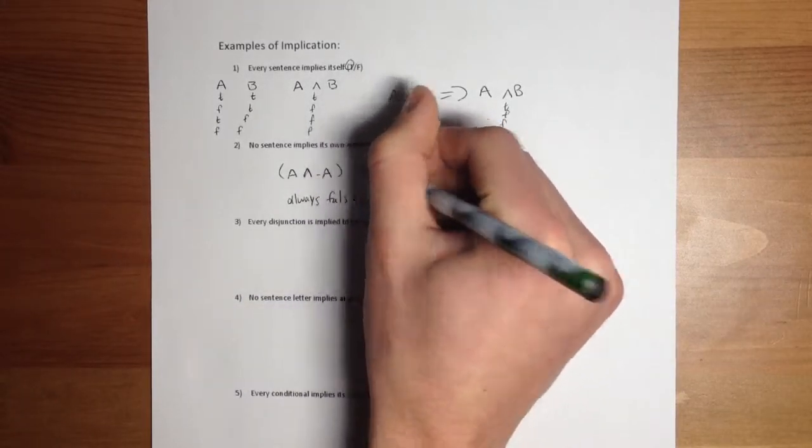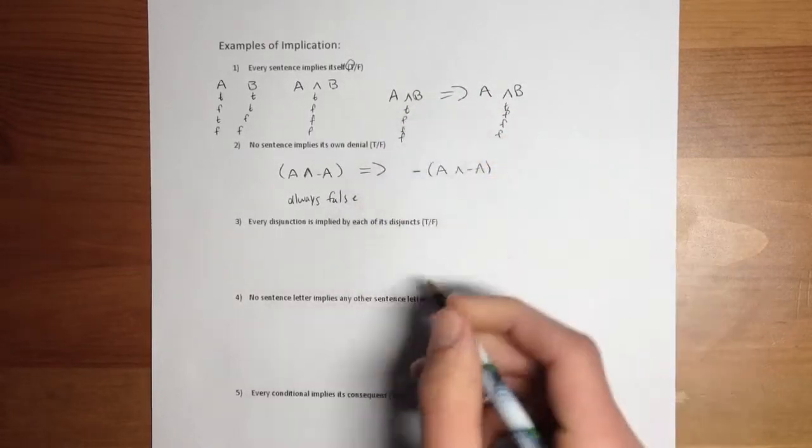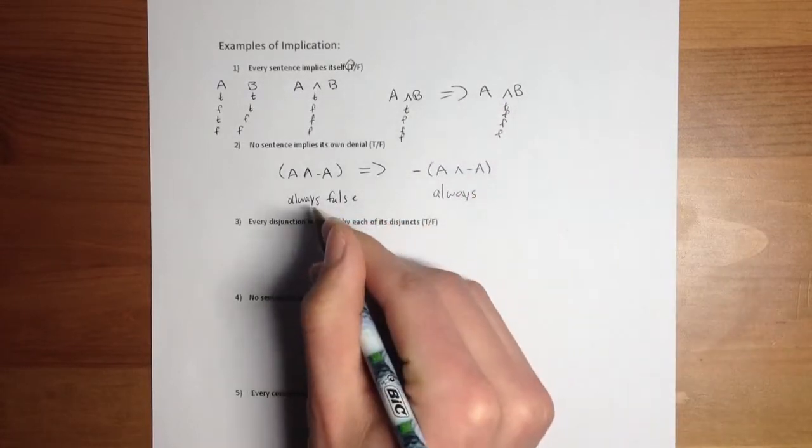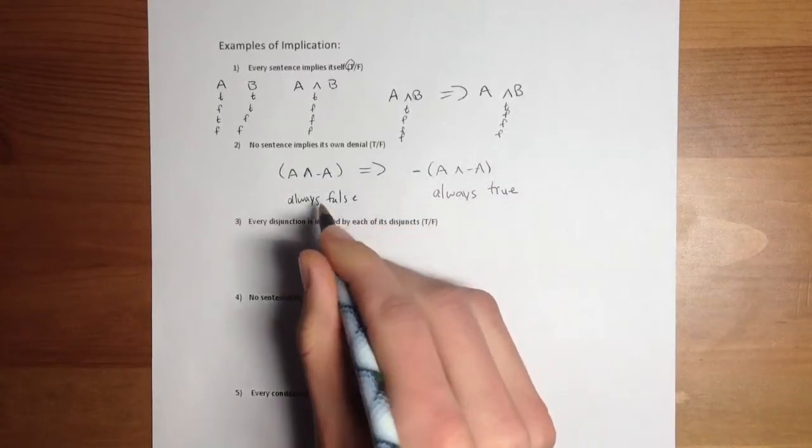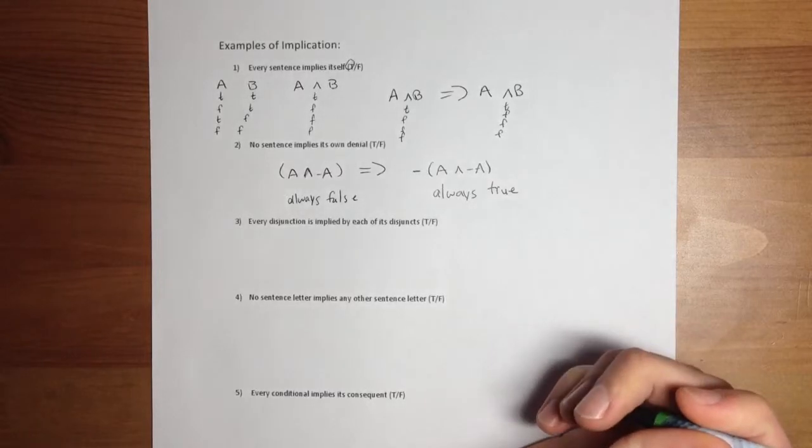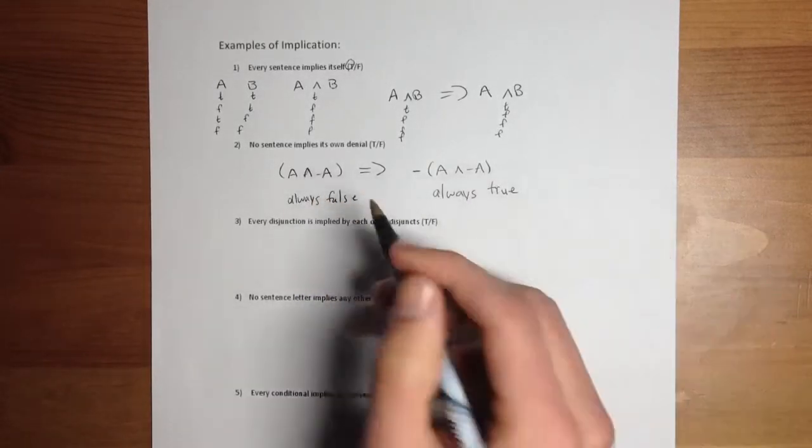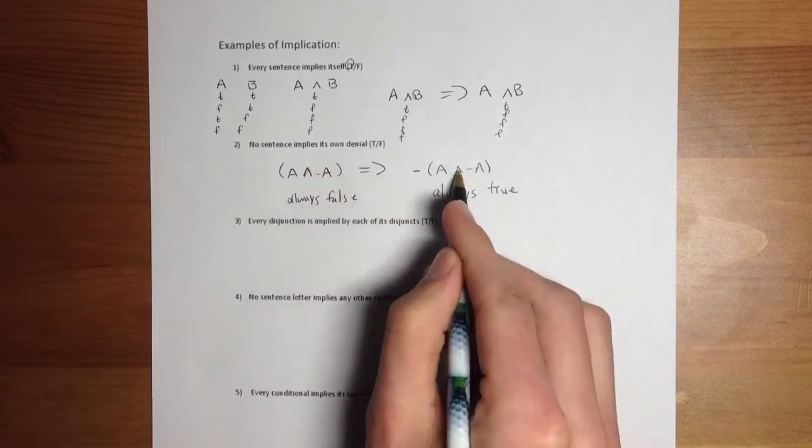So this implies the denial of this, which is just the denial. And this is always true. So here, this is always false, and that's always true. Now, the definition of implication is that something implies another thing if there is no instance where this is true and that is false.